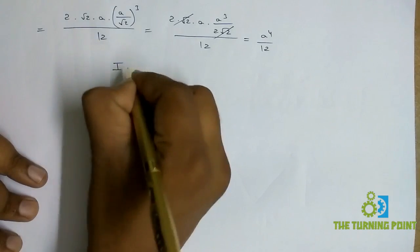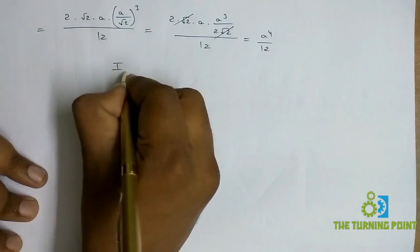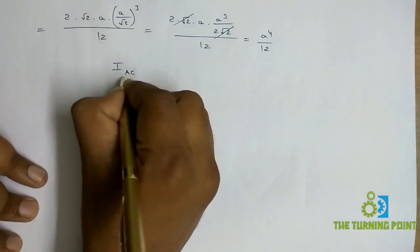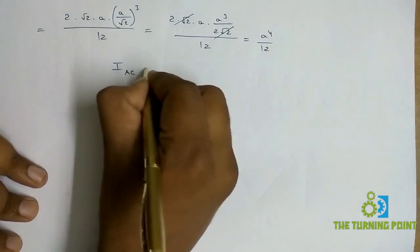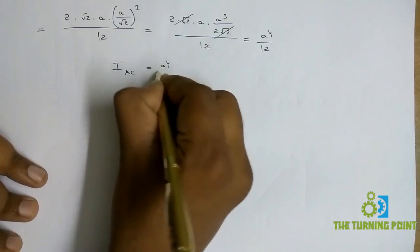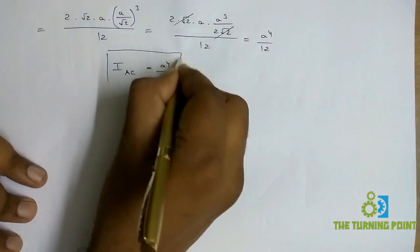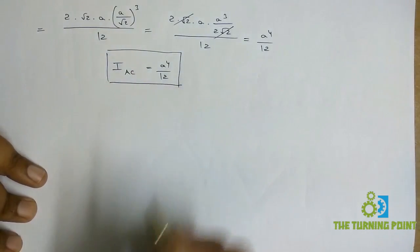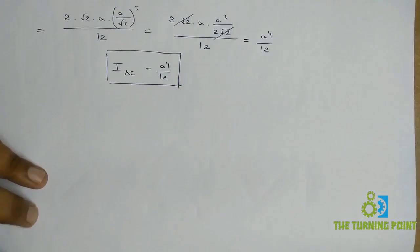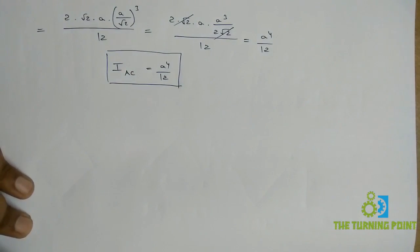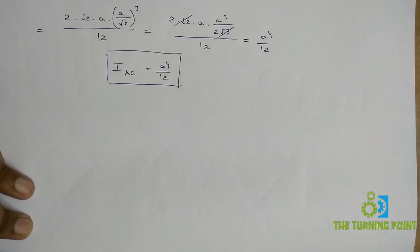This is the moment of inertia of the square about its diagonal axis AC, which is A⁴/12. Thank you for watching. If you like this video, click the like button. For more videos, do subscribe to my channel The Turning Point. Thank you all for watching.